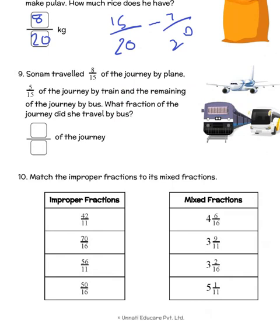We have Sonam who travelled 8 by 15 of the journey by plane, 5 by 15 of the journey by train. So altogether Sonam has travelled 8 by 15 plus 5 by 15 is 13 by 15 portion of the journey. And the entire journey is considered as 1 which is 15 by 15.